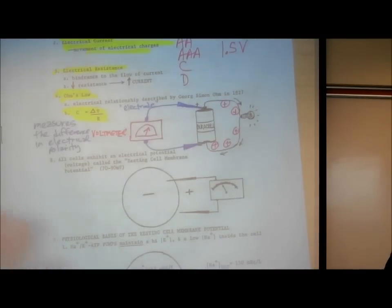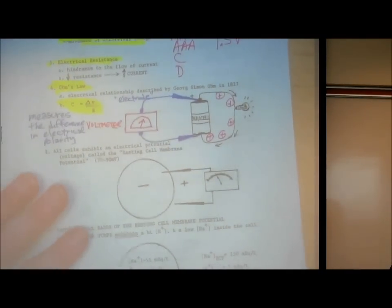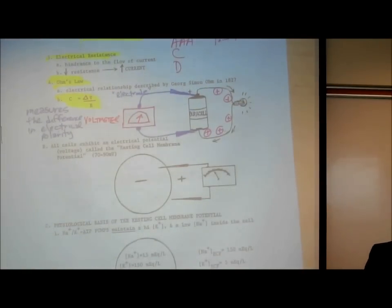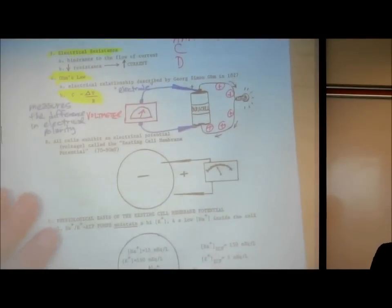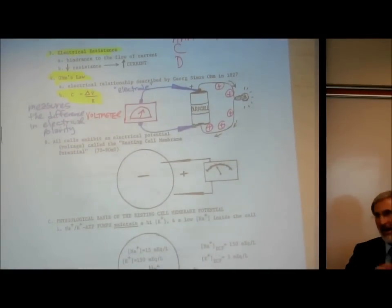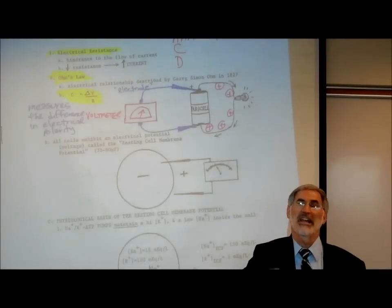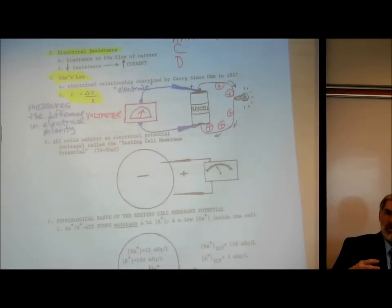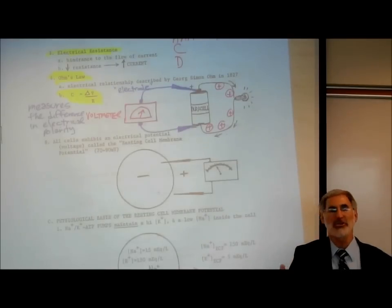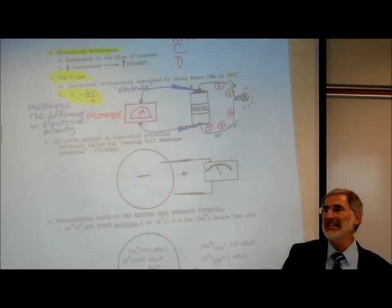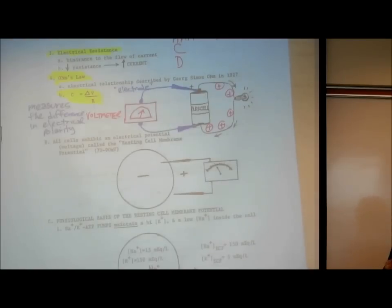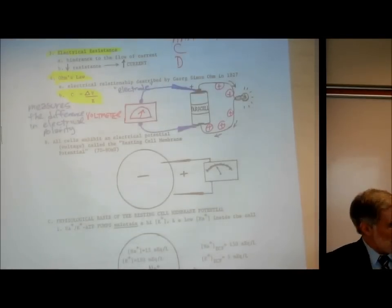What does this have to do with neurophysiology? In the 1940s, two historically important individuals — Hodgkin and Huxley — were British and trained as electrical engineers. During World War II, they were the first ones to insert a microelectrode into a cell and measure the electrical voltage of a cell.